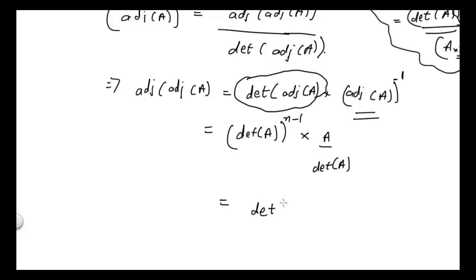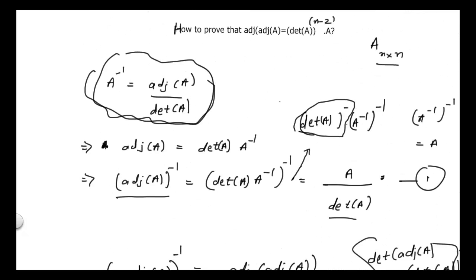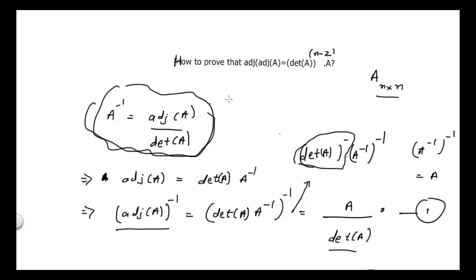From here I can write determinant of A power n minus 2 times matrix A. So I have just proved that adjoint of adjoint of A is equal to determinant of A power n minus 2 times matrix A, where A is a square matrix of order n cross n.